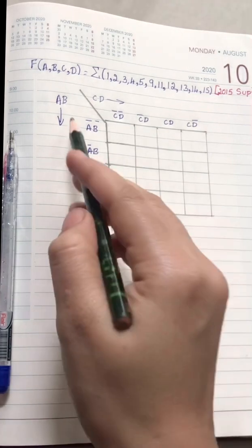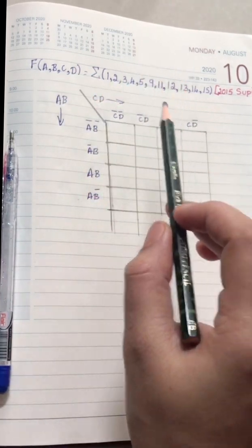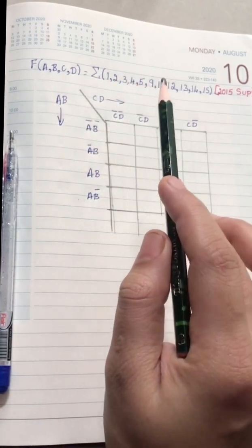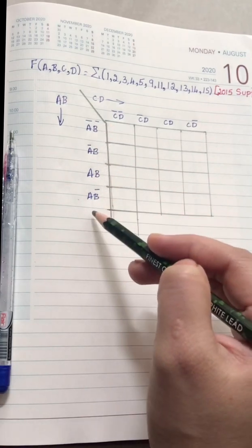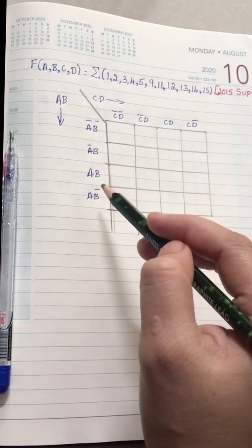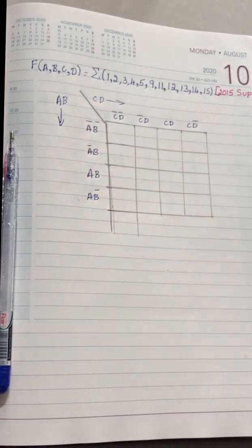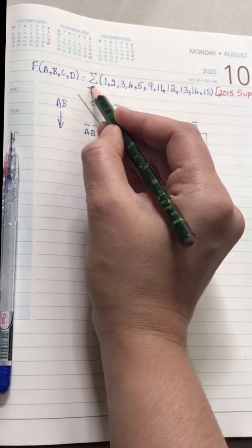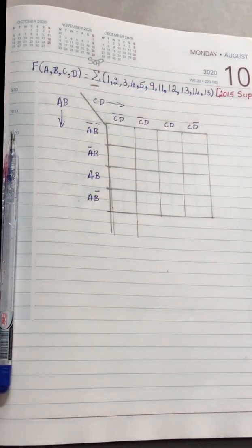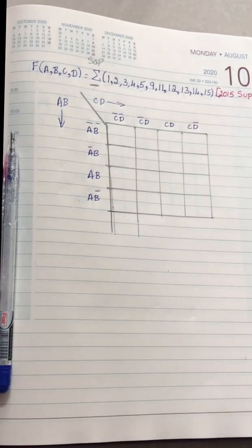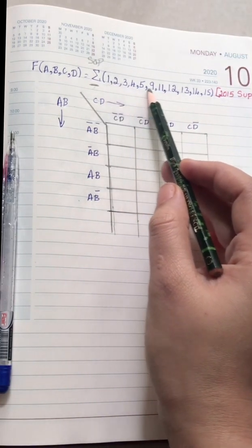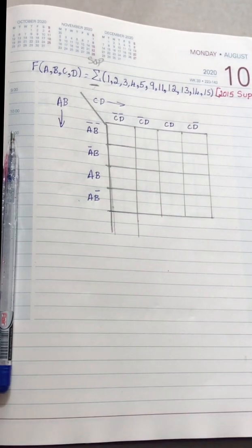In the question you have f of A, B, C, D. So when it is A B C D, you are going to use A B C D terms in your K-map. Here I have used A B in all the rows and in the columns I have used C and D. The sigma symbol means SOP, which is sum of products. Wherever these particular numbers appear, you are going to place a 1.